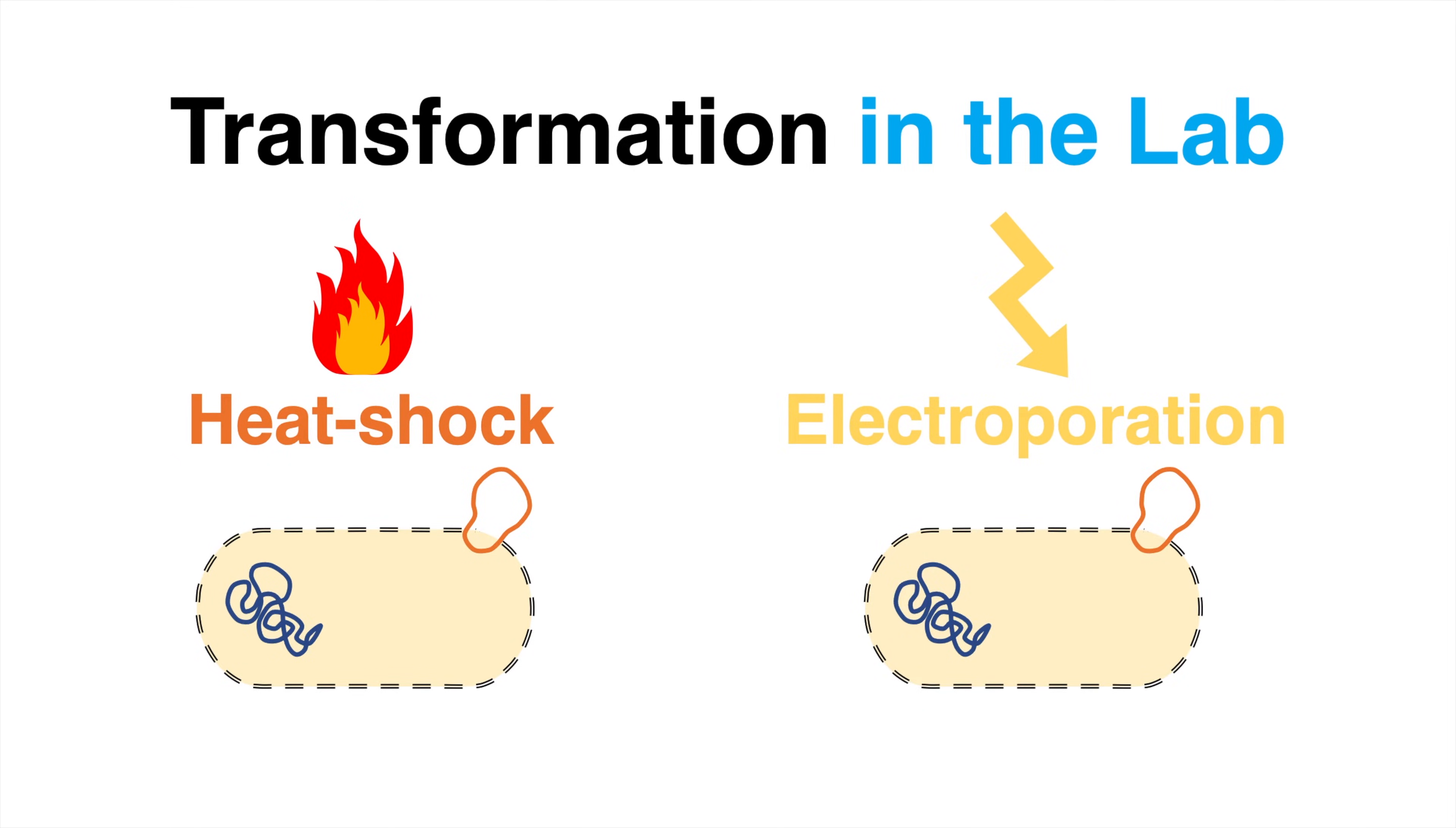The two main protocols for transforming bacteria artificially with plasmid DNA are based on a short heat shock or on electroporation. This video will demonstrate transformation using the heat shock protocol.